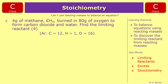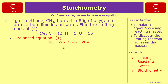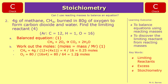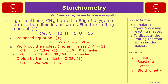Question two: 4 grams of methane CH₄ burning in 80 grams of oxygen to form carbon dioxide and water. First write the balanced equation. Methane is CH₄, oxygen is O₂, carbon dioxide is CO₂, water is H₂O — balance it. Then work out moles: CH₄ has MR of 12 plus 4 equals 16, so 4 divided by 16 gives 0.25 moles. For O₂, the MR is 32, but there are two lots making 64, so 80 divided by 64 gives 1.25 moles. Dividing by the smallest, 0.25: CH₄ gives 1 and O₂ gives 5.